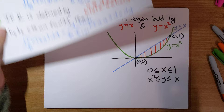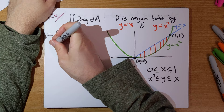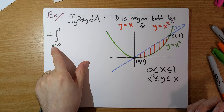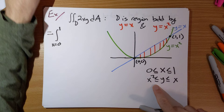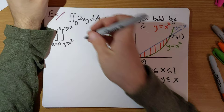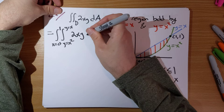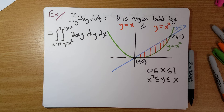Now how do we apply Fubini here? Since the region is vertically simple, we write the outer integral with x running from 0 to 1, and the inner integral with y running from g₁(x) = x² to g₂(x) = x, integrating 2xy dy dx.